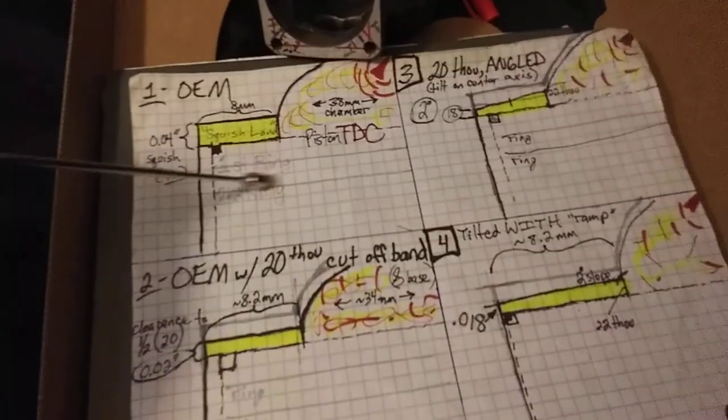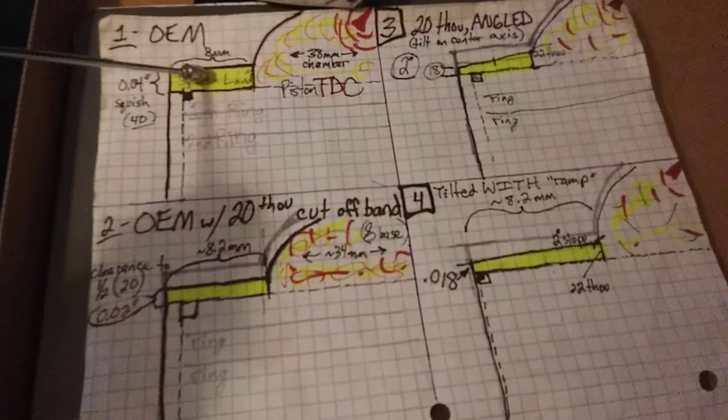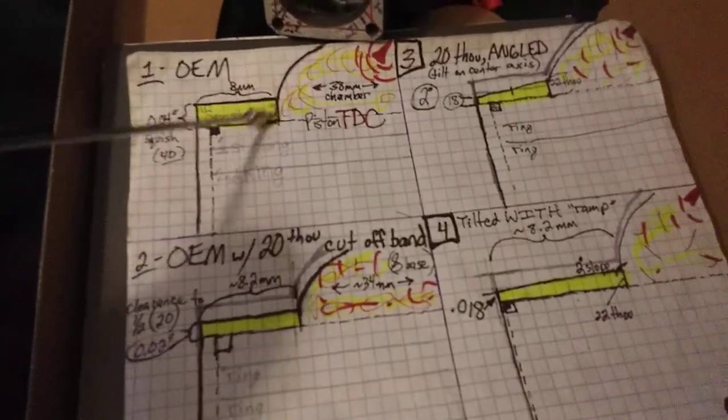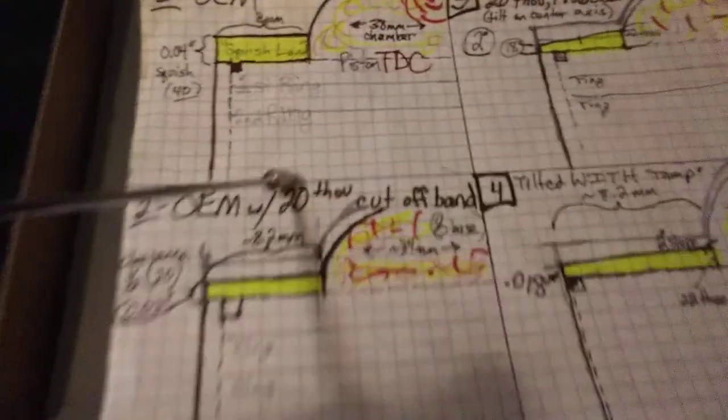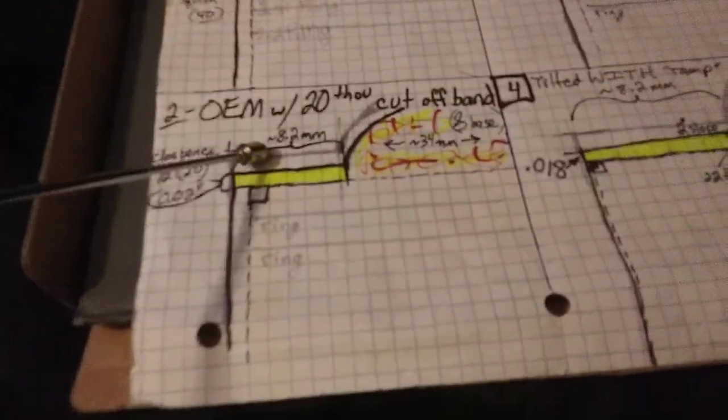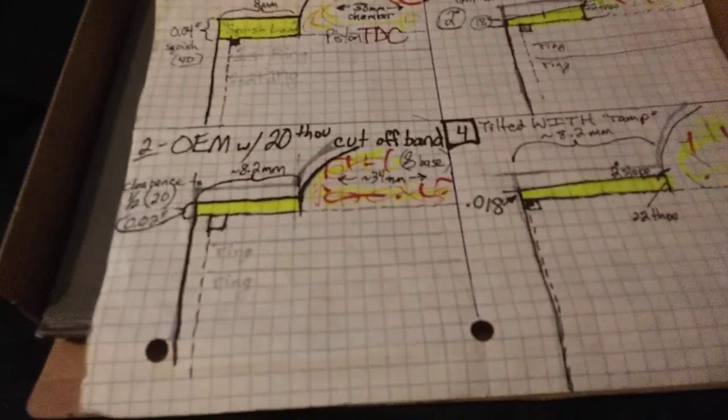So you get it off the shelf, it is a 40 thousandths squish. You have an eight millimeter band if it's a 54 millimeter cylinder, if it's a 50-50 surface area squish band. You cut so that you have base and or band so that you work it to 20 thousandths squish clearance. That's everyone's first move for good reason.